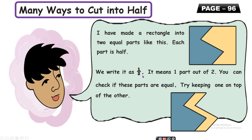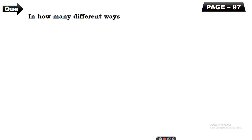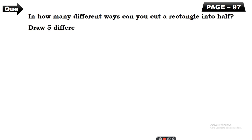One upon two means one part out of two. You can check if these parts are equal or not — try keeping one on top of the other. One part is the same size. That means we have cut this rectangle into two equal parts. We can cut it in four or five different ways.